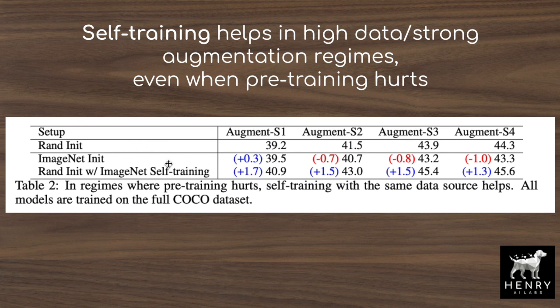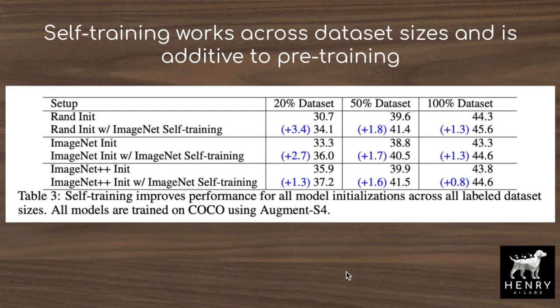Self-training helps in cases where strong data augmentation causes supervised pre-training to decrease performance, even surpassing random initialization. When using ImageNet as an unlabeled object detection dataset — pseudo-labeled by the model trained on the COCO subset — self-training continues to improve more than random initialization as augmentation strength increases. Even when increasing the amount of labeled data up to 100% of the COCO dataset, self-training remains additive and continues to improve performance, whereas supervised pre-training is surpassed by random initialization.